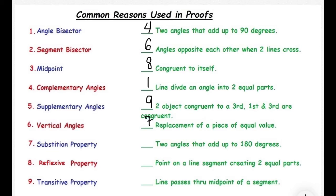Two angles that add up to 180 degrees, supplementary angle. A midpoint on a line segment creating two equal parts, a midpoint. Lastly, a line that passes through midpoint of a segment, segment bisector.